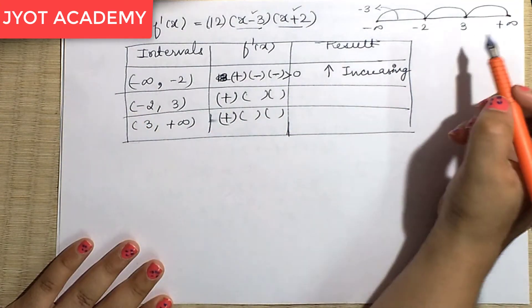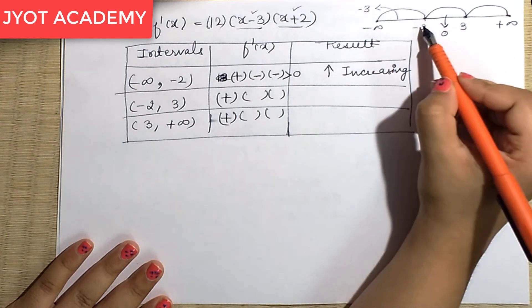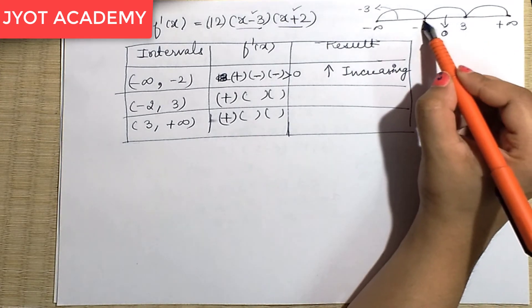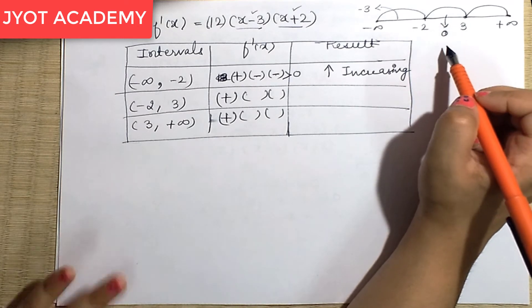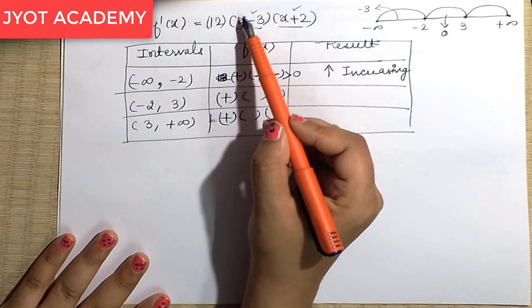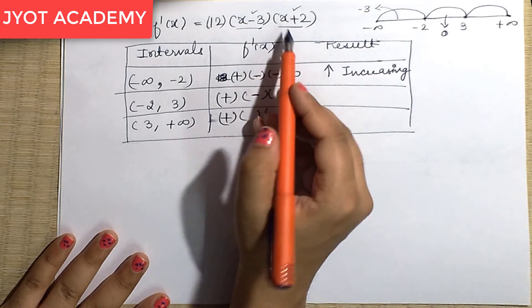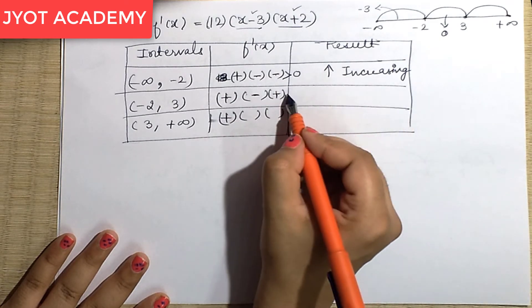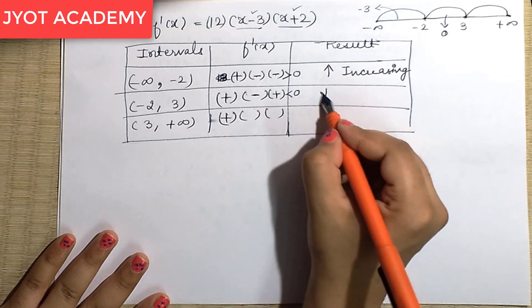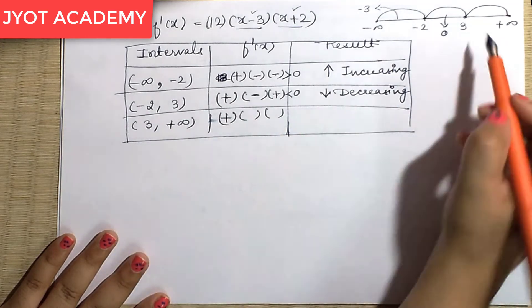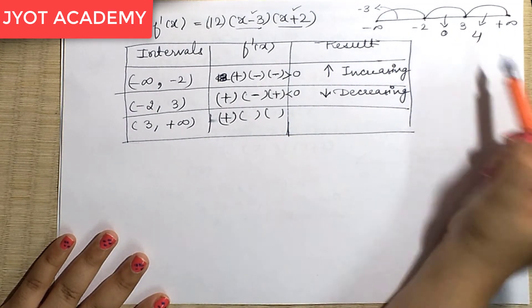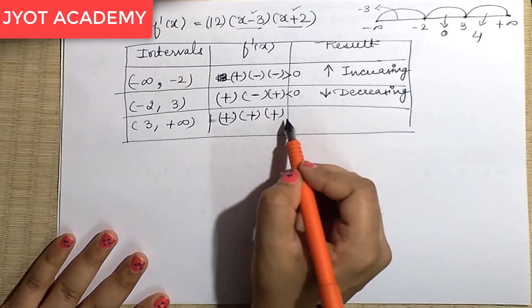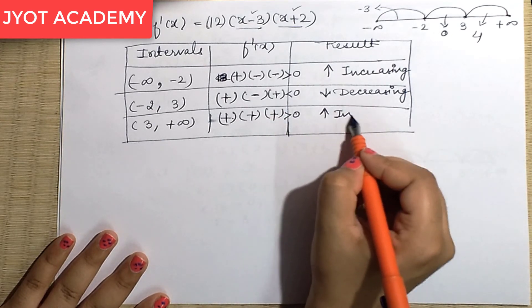For the interval (-2, 3), I choose x = 0. Then (x - 3) = 0 - 3 = -3, negative, and (x + 2) = 0 + 2 = 2, positive. So f'(x) = 12 × (negative) × (positive) = negative — less than 0. Therefore f is decreasing on (-2, 3).